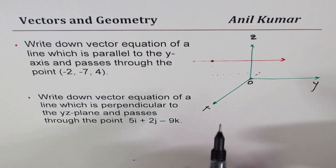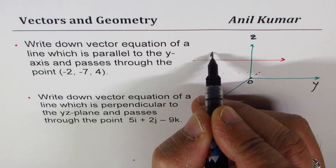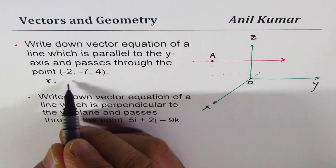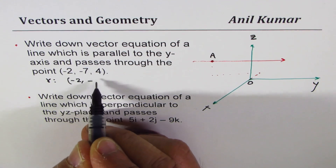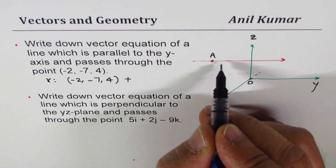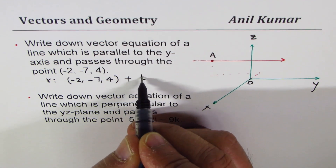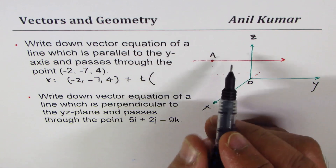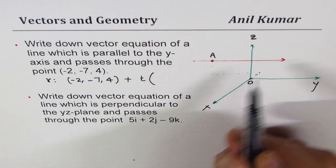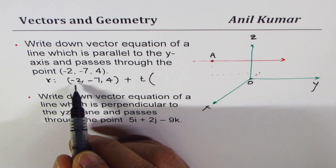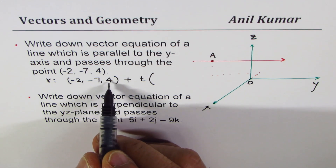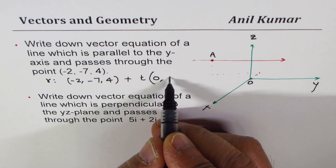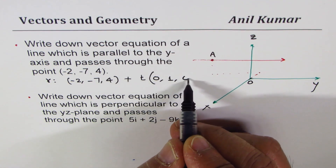If we start from the given point — let's call it point A — the equation is the point A, which is (-2, -7, 4), plus a scalar multiple of the direction. Since you only move along the y-direction, the x and z values, minus two and four, remain the same — so those components are zero. Along y we put one, and zero along z.